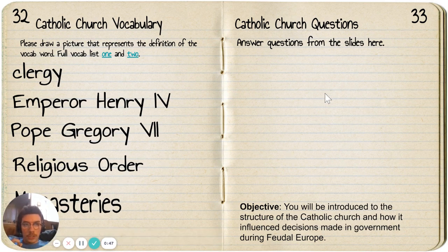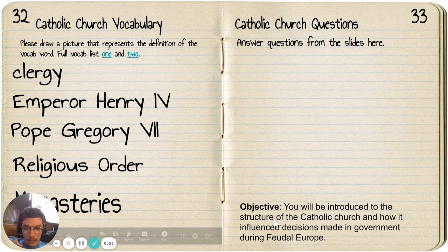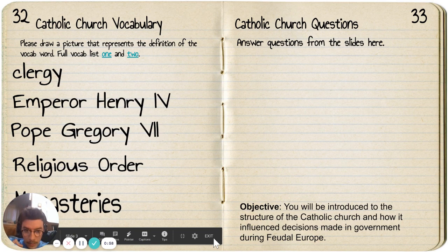And you're going to answer the questions from the slides on the other page of your notebook. Our objective for this assignment is that you will be introduced to the structure of the Catholic Church and how it influenced the decisions made in government during feudal Europe.